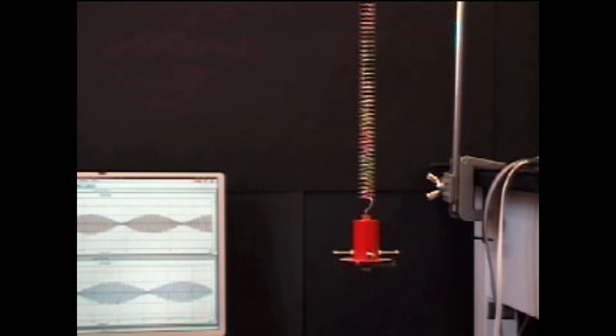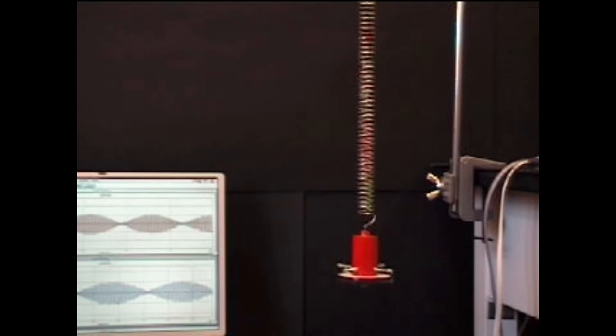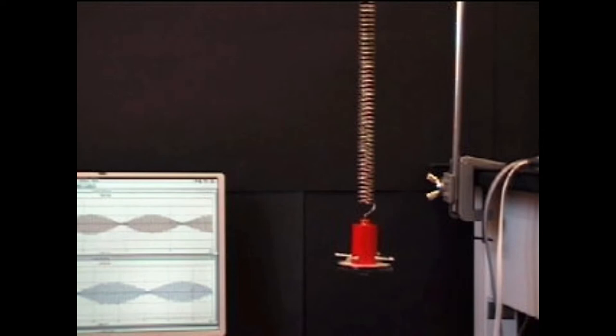It is an example of a coupled mechanical oscillator, often used as a demonstration in physics education. The mass can both bob up and down on the spring, and rotate back and forth about its vertical axis with torsional vibrations.